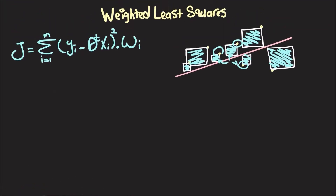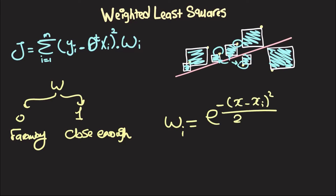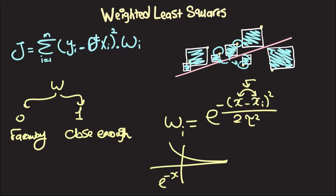Mathematically, we want a weight that approaches zero for far-away points and approaches one for nearby points. A good way to do this is the radial basis function: wi equals e to the negative power of (x minus xi) squared over two tau squared. If x and xi are far apart, the exponent becomes a large negative number and the weight approaches zero. If they are very close, the exponent approaches zero and the weight approaches one. Tau is a bandwidth parameter.